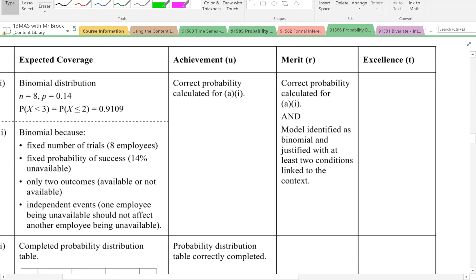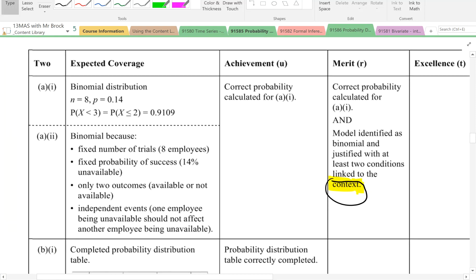Merit requires correct probability and model identified as binomial and justified with at least two conditions linked to the context. You've got to have that context in there. I'll make a new video for part B. Catch you later.